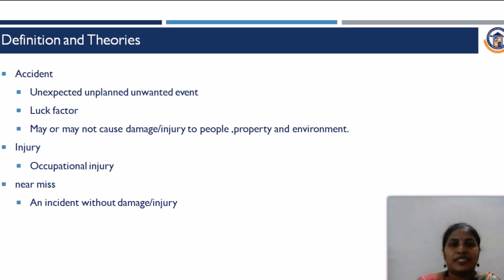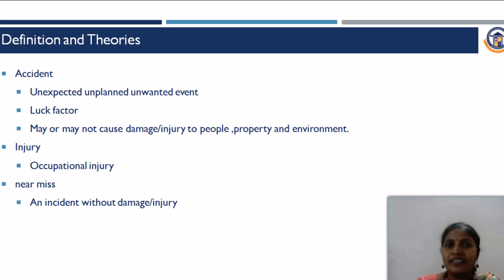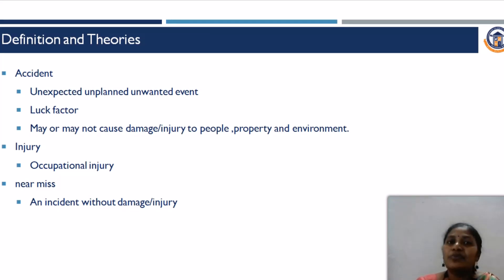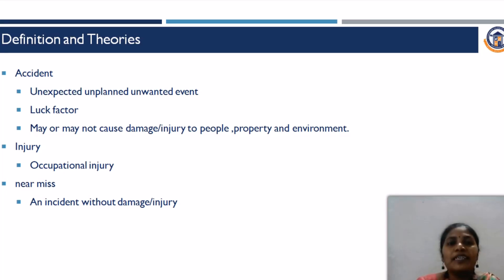What do you mean by accident? Accident is nothing but an event which is unwanted, unexpected, unplanned, and that has a tendency to cause harm to the people, property, and the environment. Generally, accident is referred to as a luck factor because the consequence — it may or may not happen. The severity of that particular accident is defined by the luck factor. That is why in the definition, it has been stated as it may or may not cause damage or injury to the people, property, and the environment.